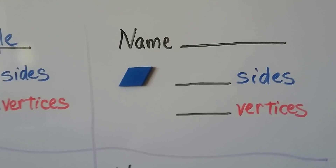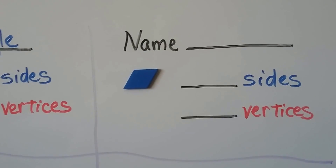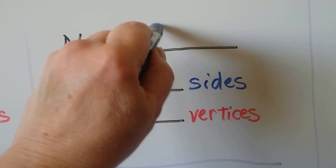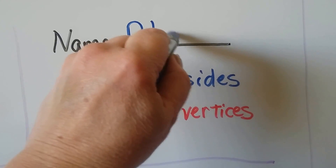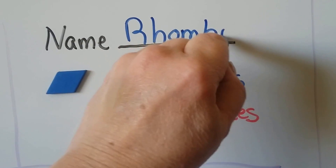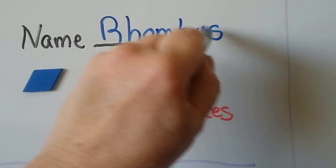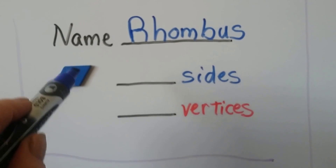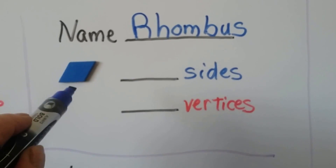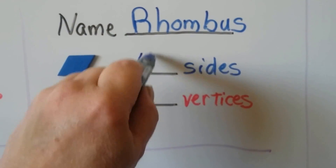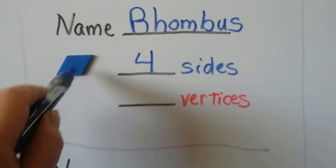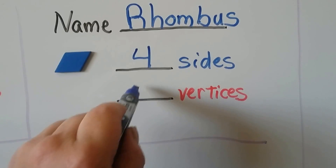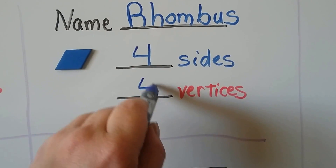Do you remember what this one's called? That's a rhombus. It has one, two, three, four sides, and it has one, two, three, four corner vertices, doesn't it?